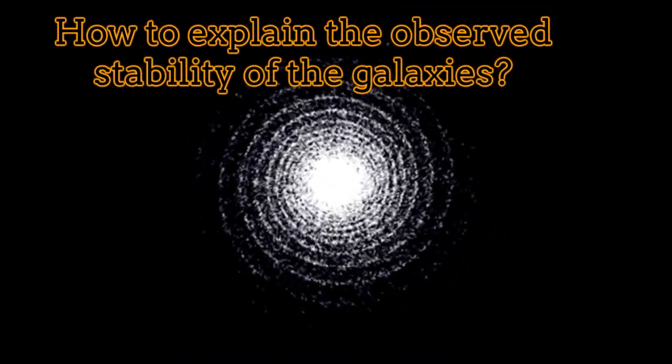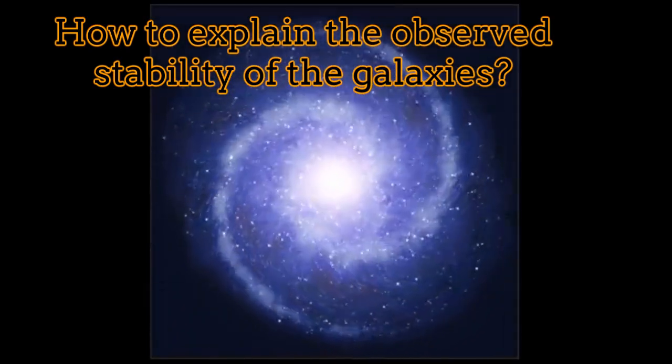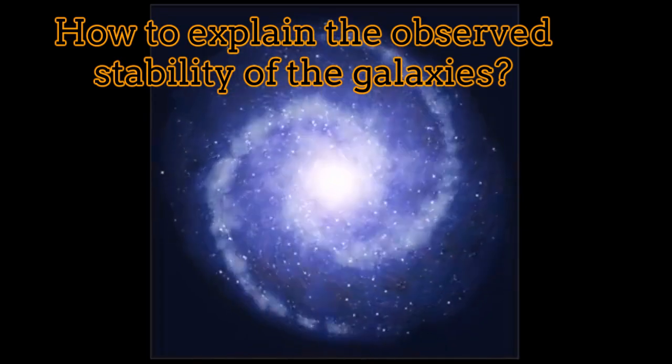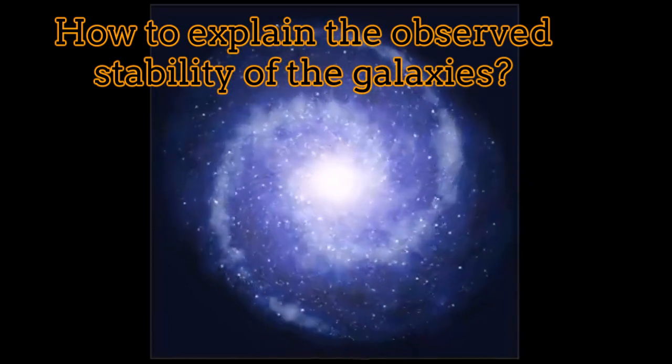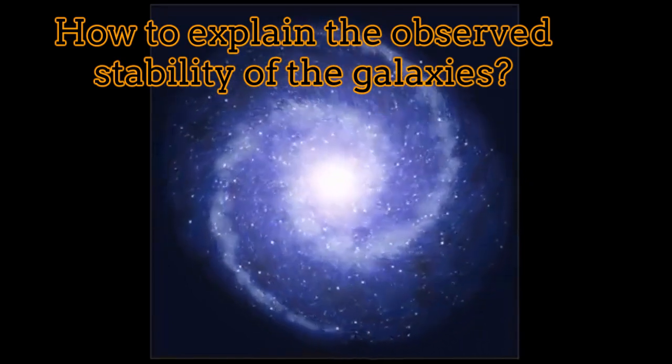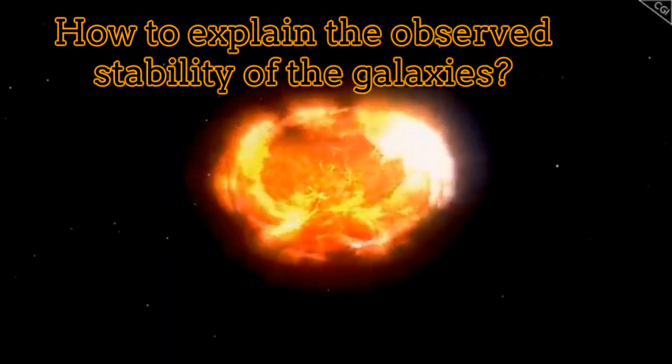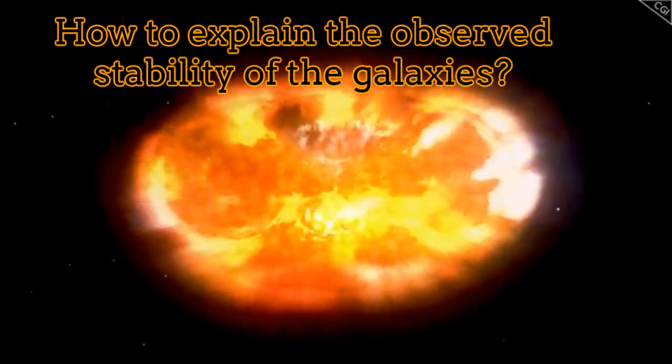Before going ahead, let's revise the problem of dark matter. The evidence for dark matter came initially from the galaxy rotation curves. Basically, the galaxies rotate too fast for the amount of matter which they contain, the amount of visible matter, of course. In such a case, explaining the stability of the galaxies is a challenge without the existence of dark matter.